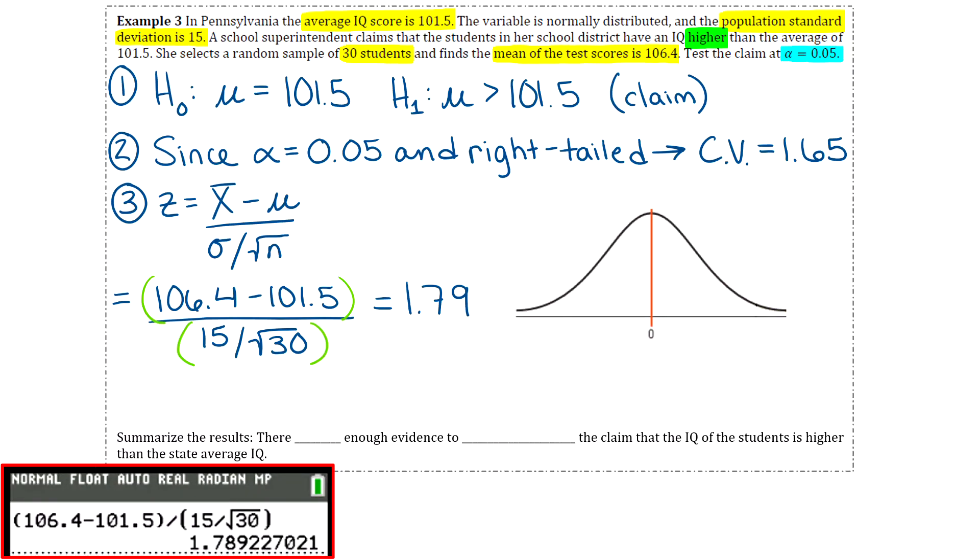Step four is to make the decision to reject or not reject the null hypothesis. For step four, what you want to do is draw a normal distribution curve, just like a bell curve. Then we want to figure out what our rejection region is. Put your critical value on that bell curve, so 1.65. I know it's on the right side of zero because 1.65 is larger than zero. Since this is a right-tailed test, my rejection region is going to be in this area to the right, on the right side of that critical value. We're going to see whether our test value falls into that rejection region. Our test value was 1.79. If I mark that on my number line, I can see that 1.79 does fall into the rejection region.